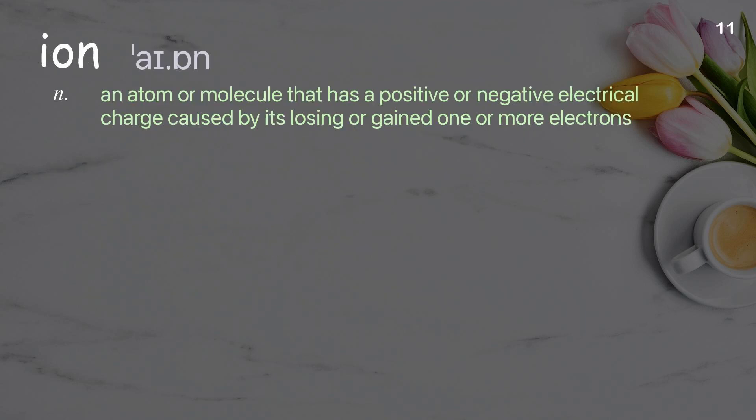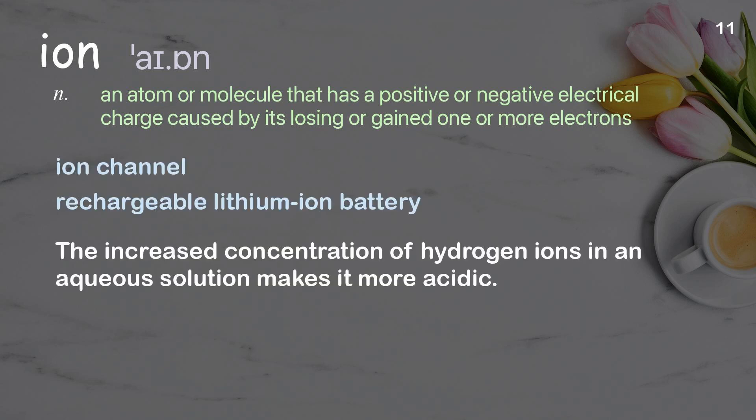Ion. An atom or molecule that has a positive or negative electrical charge caused by its losing or gaining one or more electrons. Examples: Ion channel. Rechargeable lithium-ion battery. The increased concentration of hydrogen ions in an aqueous solution makes it more acidic.